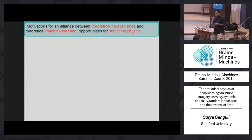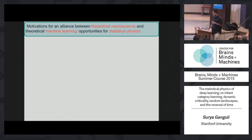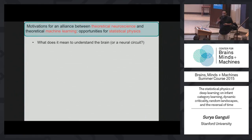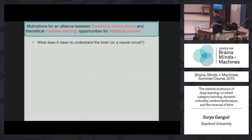What do I want to talk about today? There are lots of motivations for an alliance between theoretical neuroscience and theoretical machine learning that create opportunities for physics and math. The question that should haunt all of us is: what does it even mean to understand how the brain works or how a neural circuit works? That's an open question we really have to come to terms with.